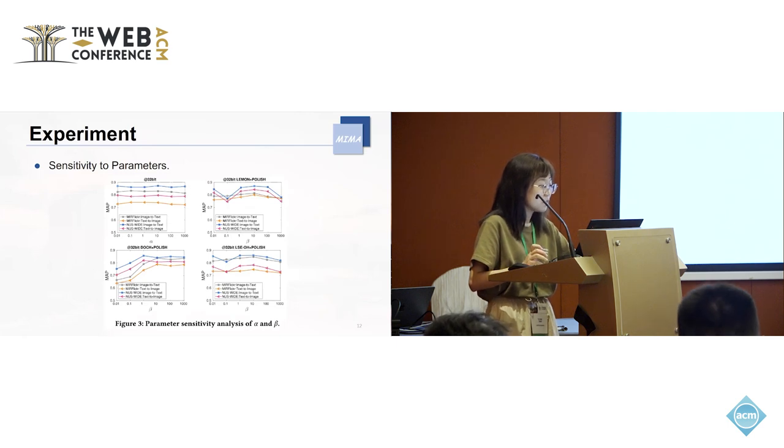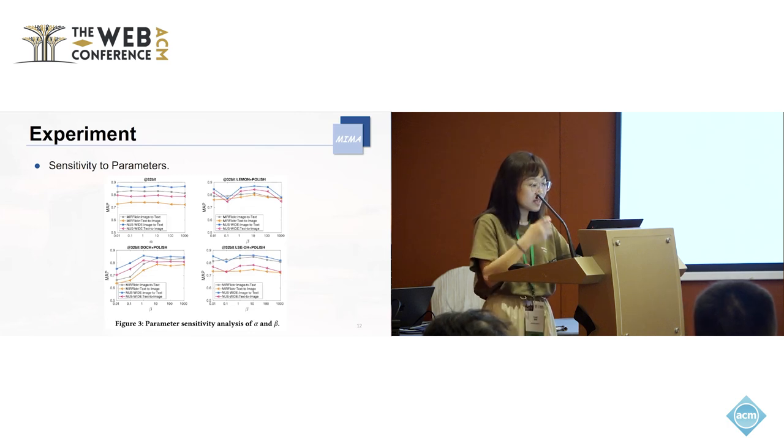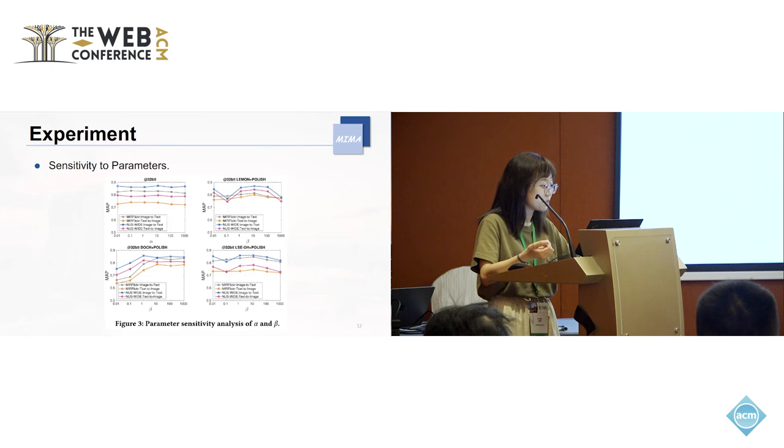The parameter beta controls the balance between Polish and the original method. We can see that the value of beta affects the result because it depends on the original method. Although beta is sensitive, when it's set to 10, all baselines perform well.